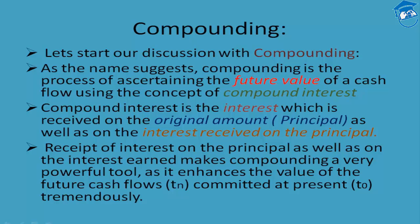Under compound interest, we first earn interest on the principal; then whatever interest has been earned, that interest becomes our new principal, upon which we earn another interest. The particular interest is added back to the principal, making the existing principal larger. On that increased principal amount we earn another return — interest upon the interest already earned on the principal. So under compound interest, the interest becomes our new principal.